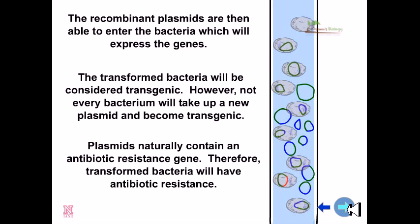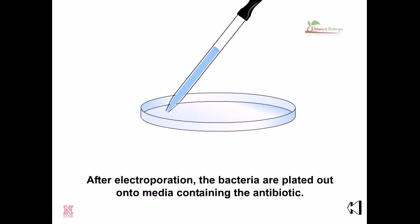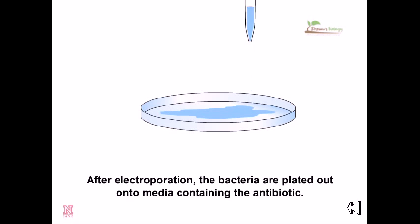The recombinant plasmids are then able to enter the bacteria, which will express the genes. The transformed bacteria will be considered transgenic. However, not every bacterium will take up the plasmids and become transgenic. Plasmids naturally contain antibiotic resistance genes, therefore transformed bacteria will be antibiotic resistant after electroporation.